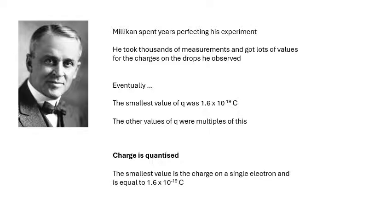Millikan spent years perfecting his experiment. He started using water like water vapor instead of oil drops, but then it kept evaporating and all kind of nightmare. Eventually he got it all working. He took thousands of measurements and he got lots of values for different charges on the oil drops. Now the important thing as far as we are concerned is this here. Eventually the smallest value of q is, these Americans didn't use coulombs, they had some other weird units, but in SI units, 1.6 × 10⁻¹⁹ coulombs. That was the smallest value, and then all of the other values were multiples of that.